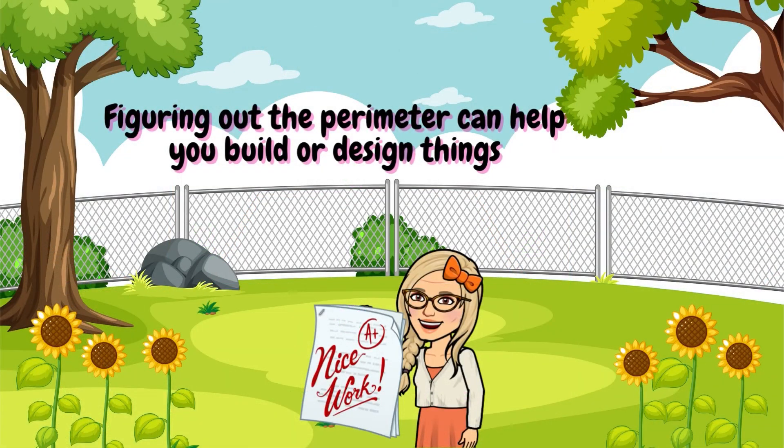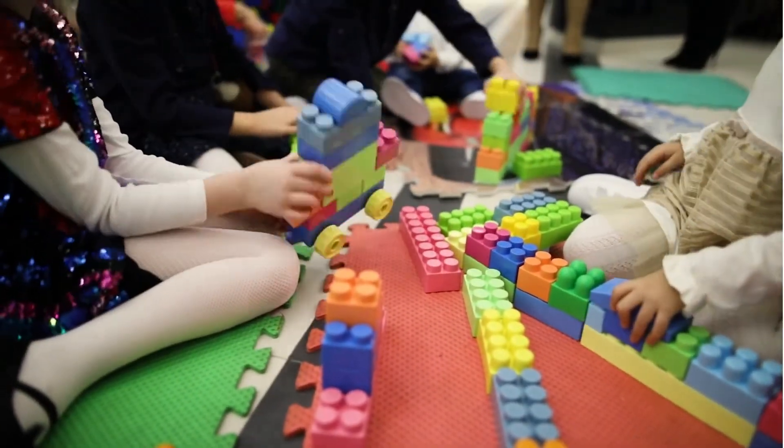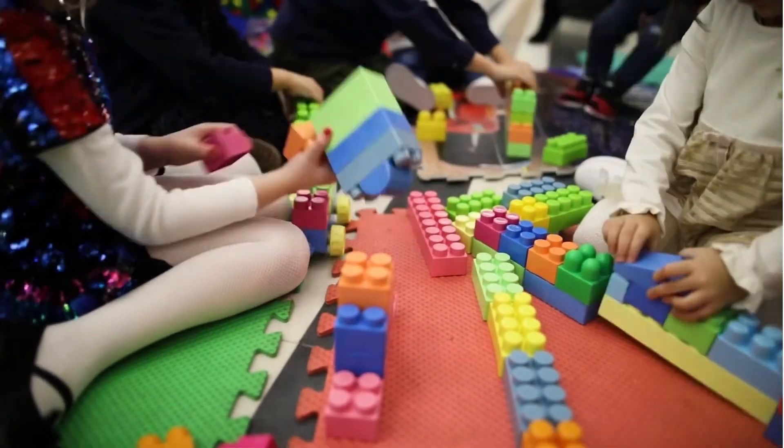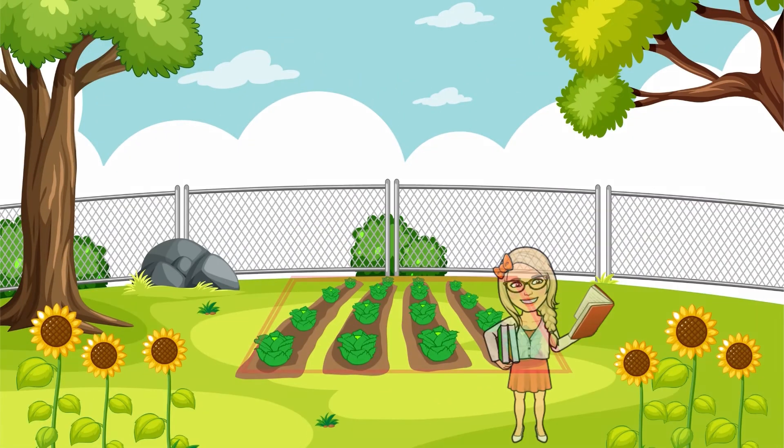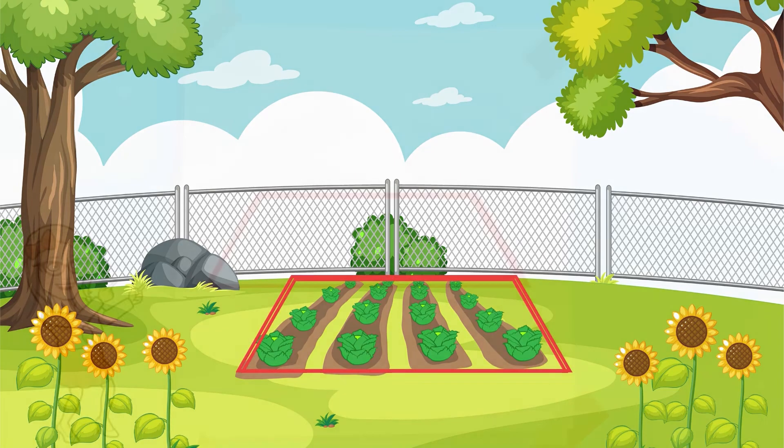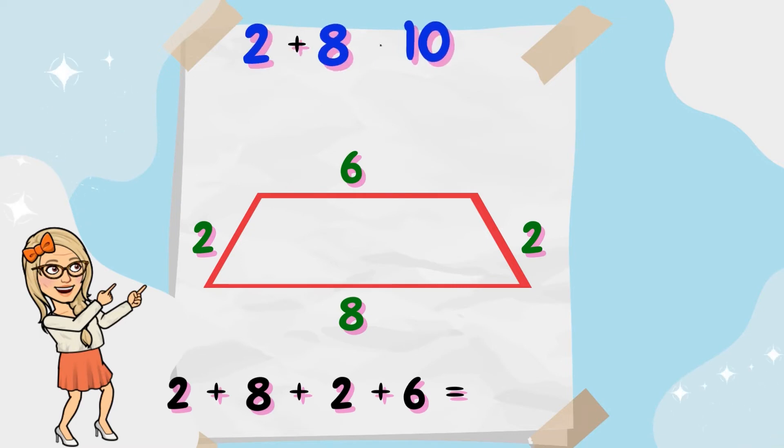Figuring out the perimeter can help you build or design things. I want to build a fence that goes around my garden. Come on, guys! Let's find the perimeter of my garden so that I can know how much fence I need. This is a quick reminder because we already did this. We already found this perimeter. So, remember that we have to add all the sides length and we're going to have the correct perimeter. So, the perimeter of my garden is 18 feet.